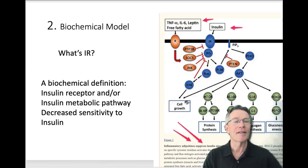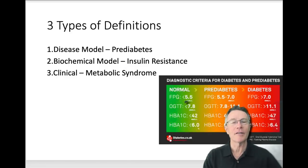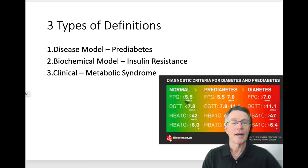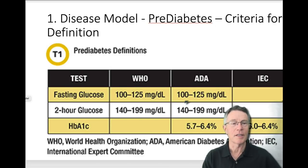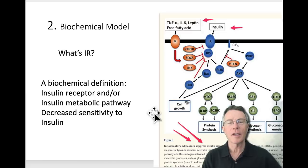Every one of these slides starts off answering a question and then creates a whole bunch of new ones — but that's life. Let's repeat and review real quick. Three types of definitions: disease model, pre-diabetes; biochemical model, insulin resistance; and clinical model, metabolic syndrome. We just covered the disease model for pre-diabetes. Now let's look at the biochemical model: insulin resistance.